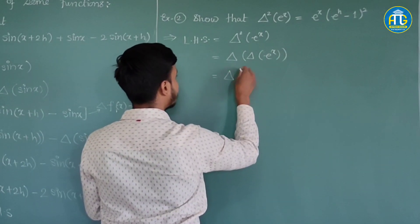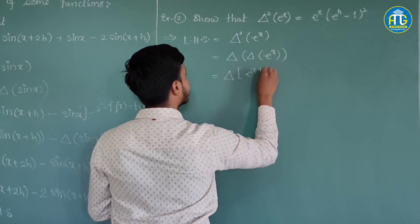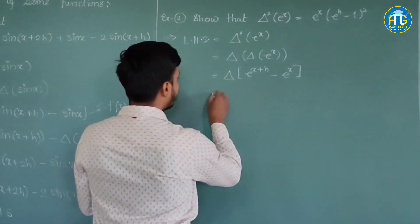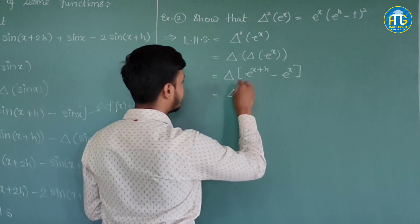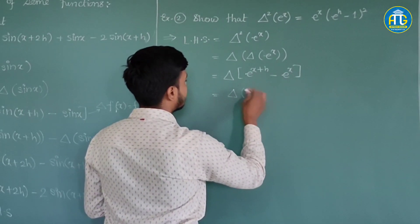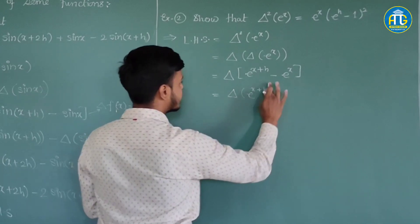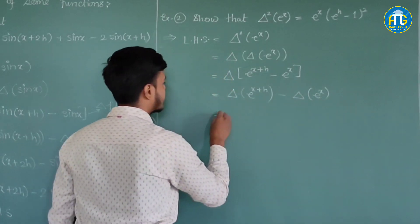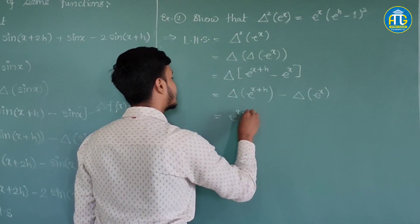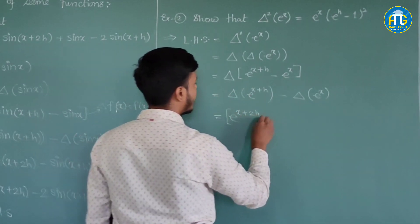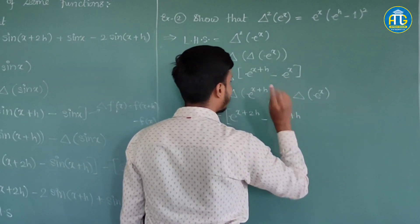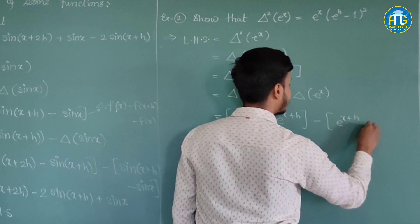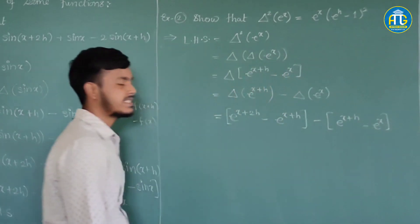Apply the definition of the forward difference operator, so it would be e^(x+h) − eˣ. Now distribute the forward difference operator to each term: operate on e^(x+h) and on eˣ separately. This gives e^(x+2h) − e^(x+h) minus [eˣ⁺ʰ − eˣ].